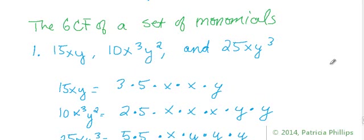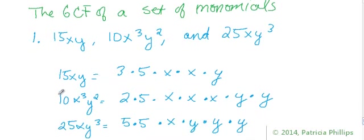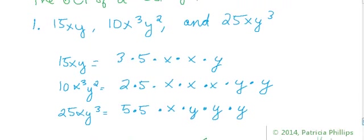You're going to write each of these monomials separately. I choose to write them vertically so that we can write out horizontally from left to right what all the factors are. Starting with the first one, 15x²y equals 3 times 5 times x times x times y.